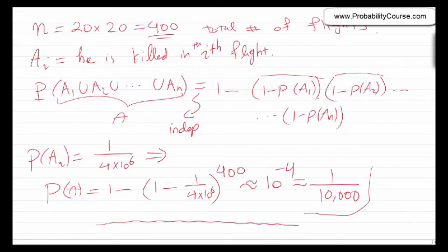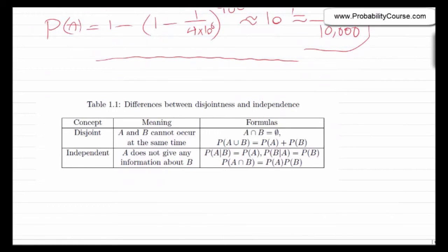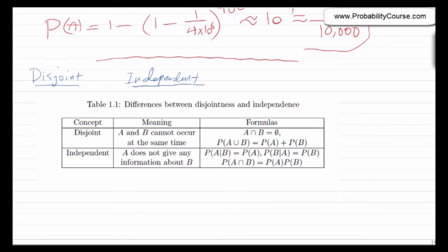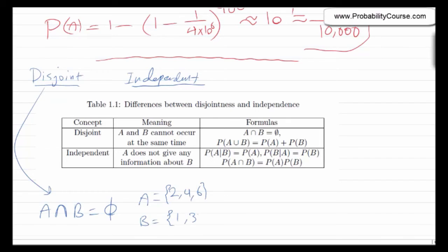I want to talk about a common mistake: people often confuse disjoint events and independent events. These are completely different concepts. We say two events are disjoint if their intersection is empty — they cannot occur at the same time. For example, rolling a die where one event is an even number and another is the outcome being 1 or 3: these are disjoint. Independent, on the other hand, means that knowing B has occurred does not change our belief about the probability of A.